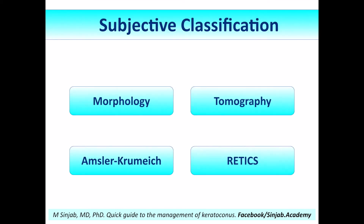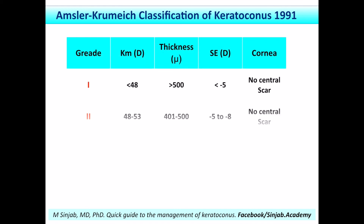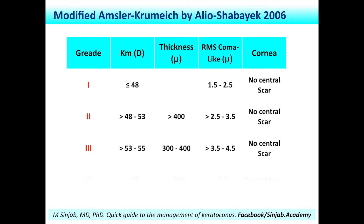The Amsler-Cromish classification is the earliest subjective classification. It was developed in 1991 and grades the disease into four stages depending on the average K readings, the central thickness of the cornea, the spherical equivalent of the refractive error, and the status of the cornea in terms of corneal transparency and the presence or absence of a scar. Later on, other classifications came to modify the Amsler-Cromish.